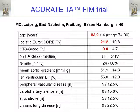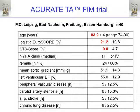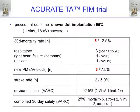Looking at the dataset from the FIM trial: 40 patients were treated in five different German sites. This represents a typical risk profile for a TAVI cohort — mean age 83, mean logistic EuroSCORE 21, mean STS score 9%. 95% of all implants were uneventful.